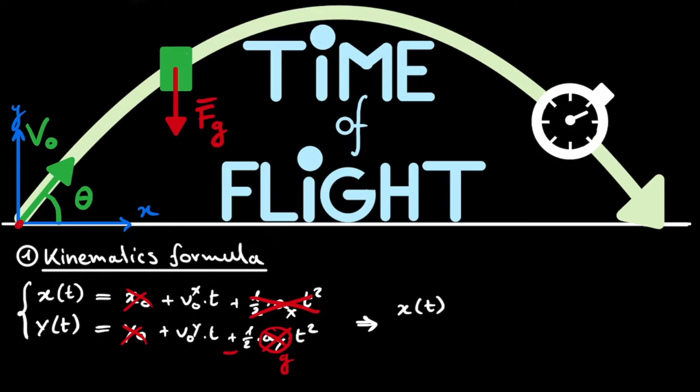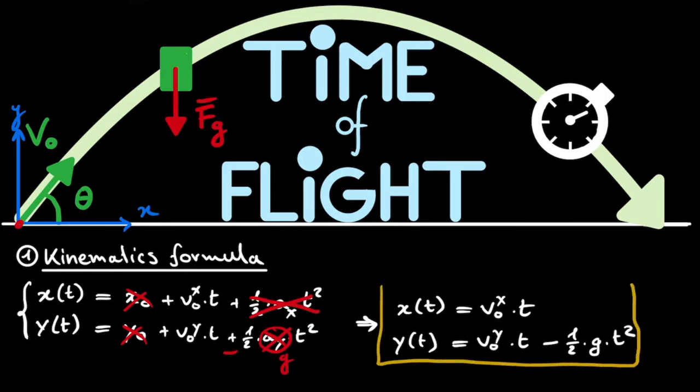We have the equation for x, which is that x of t is simply equal to our initial velocity in the x-direction multiplied by t. And for the y-direction, we get the following. We get that y of t is equal to our initial velocity in the y-direction multiplied by t minus one half times g times t squared. And now these are the two equations that we can use to derive the time of flight of our object.